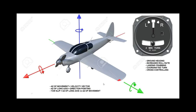Looking at a 2D plane and ignoring height for now: the azimuth of movement of the aircraft is the velocity vector — basically the course the aircraft is actually going. That is not the same as what the aircraft is pointing. The azimuth of the longitudinal axis is the direction that the aircraft is pointing. The yaw slip angle is the difference between those two — the difference between what the aircraft is actually pointing and what it's actually traveling on.